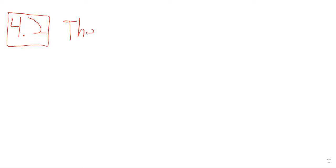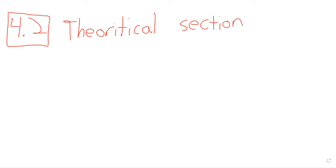We are going to do section 4.2 today. Section 4.2 is a weird section, or maybe it's just weird for where it is in the textbook. This is applications of the derivative — where we're supposed to be using the derivative to solve concrete problems. Wedged between absolute and local extrema is this theoretical section. We're mainly going to be talking about something called the Mean Value Theorem today, and the applications of that theorem.